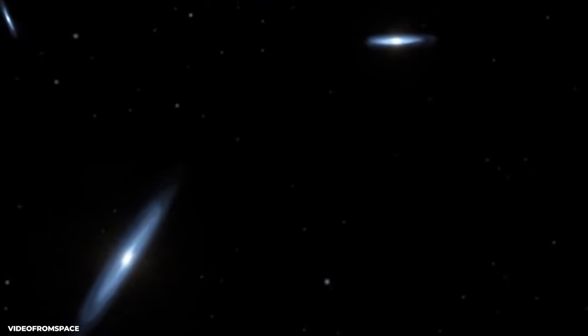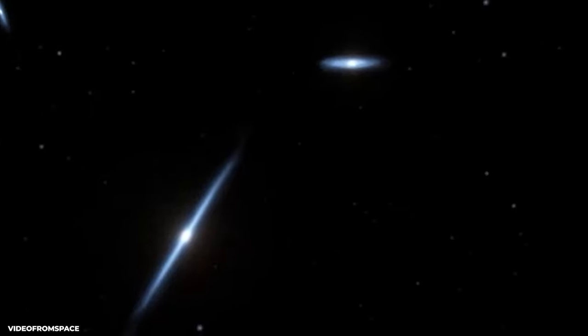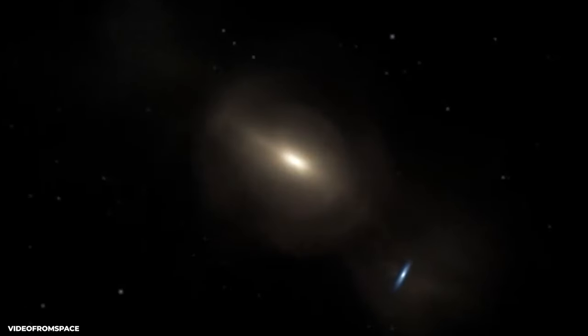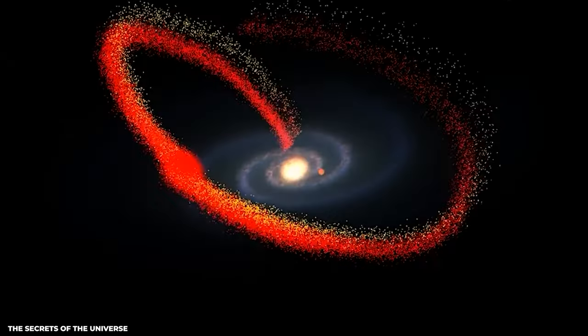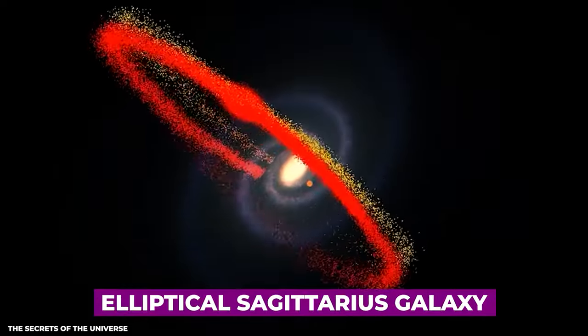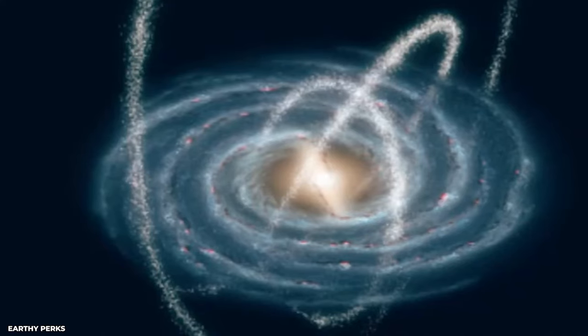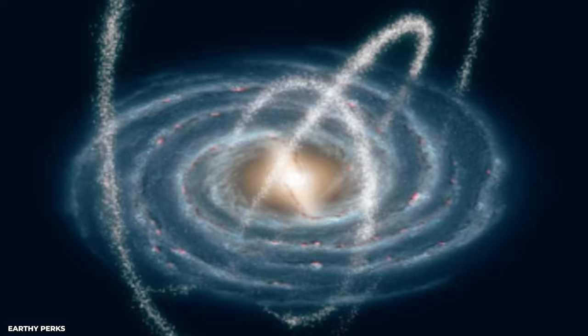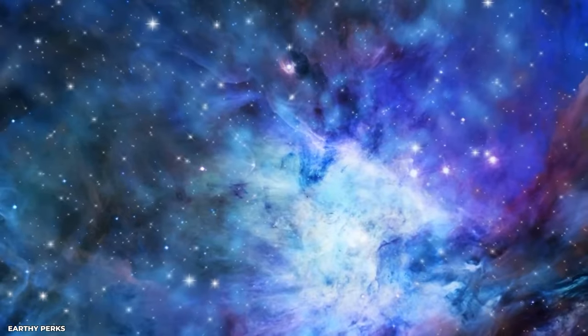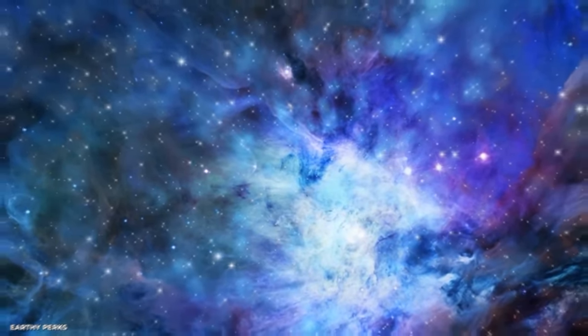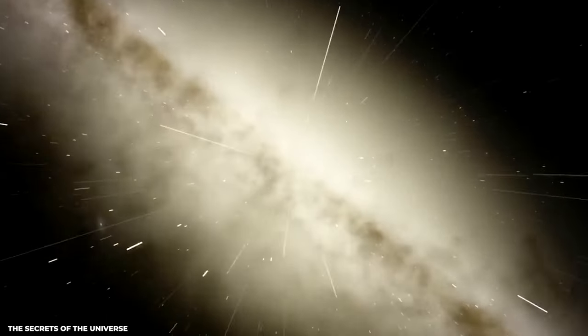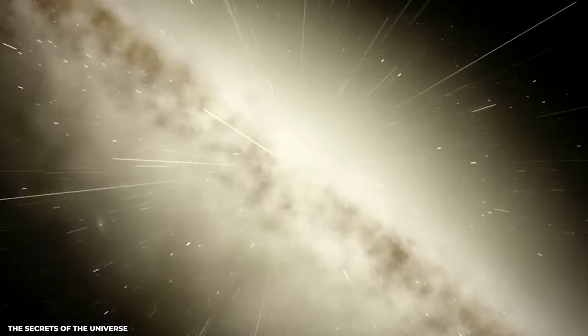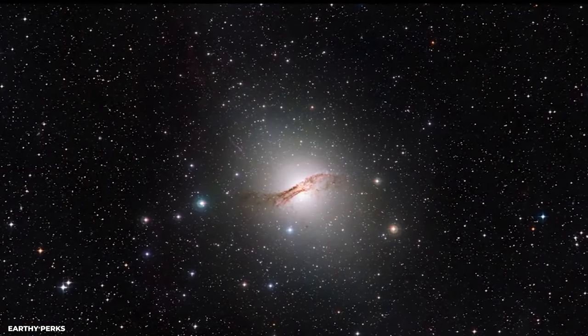But the Milky Way's galactic adventures didn't end there. It continues to be impacted by other galaxies, including the nearby elliptical Sagittarius galaxy. Its gravitational pull has induced waves of star formation and caused a warp in the galaxy's disk. These effects have contributed to the Milky Way's ongoing evolution, shaping its appearance and behavior.